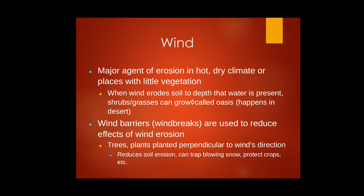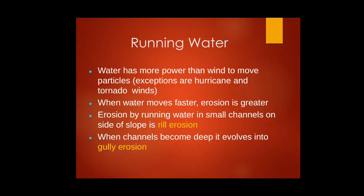Wind barriers — such as plants — are used to reduce the effects of wind erosion. Plants in an oasis reduce erosion in the direction of wind, trap snow, and protect crops. Water has more erosive power than wind, with exceptions for hurricanes and tornadoes. When water moves faster, erosion is greater — a faster-moving river carries more silt and sand downstream.